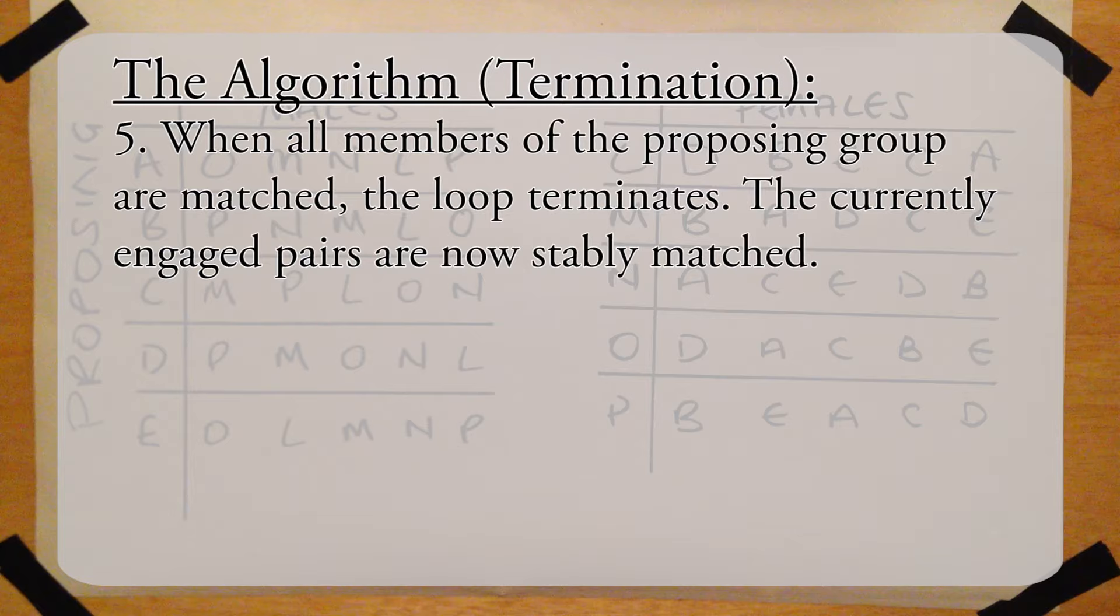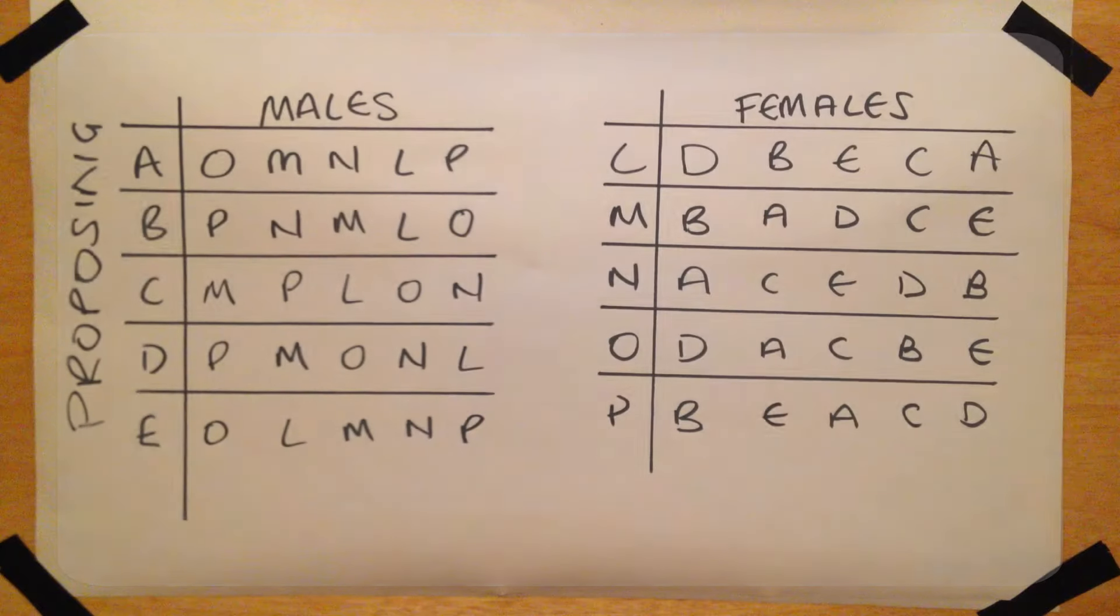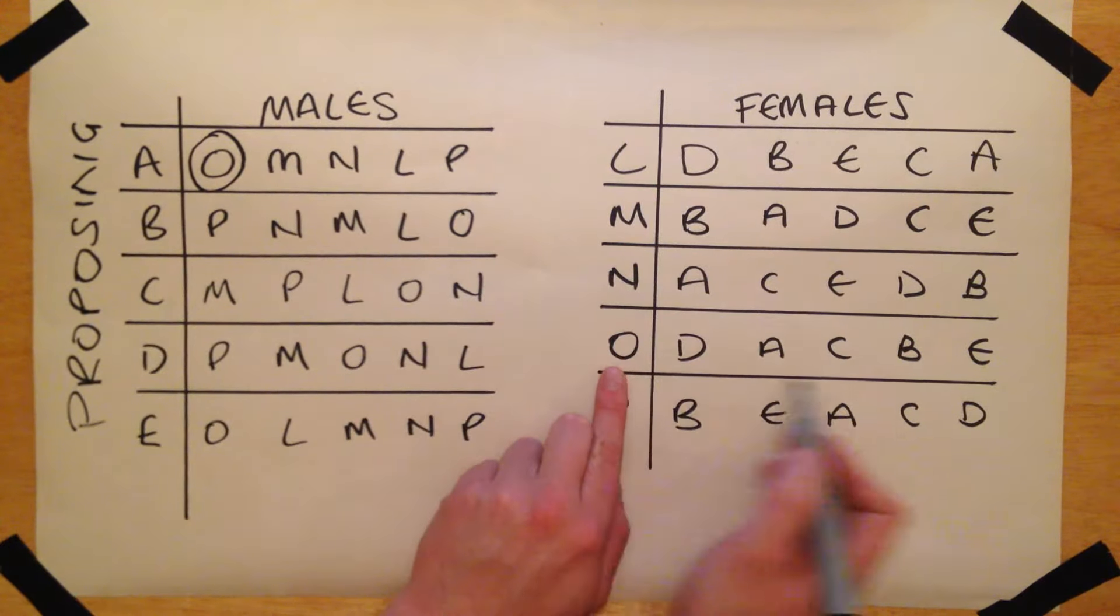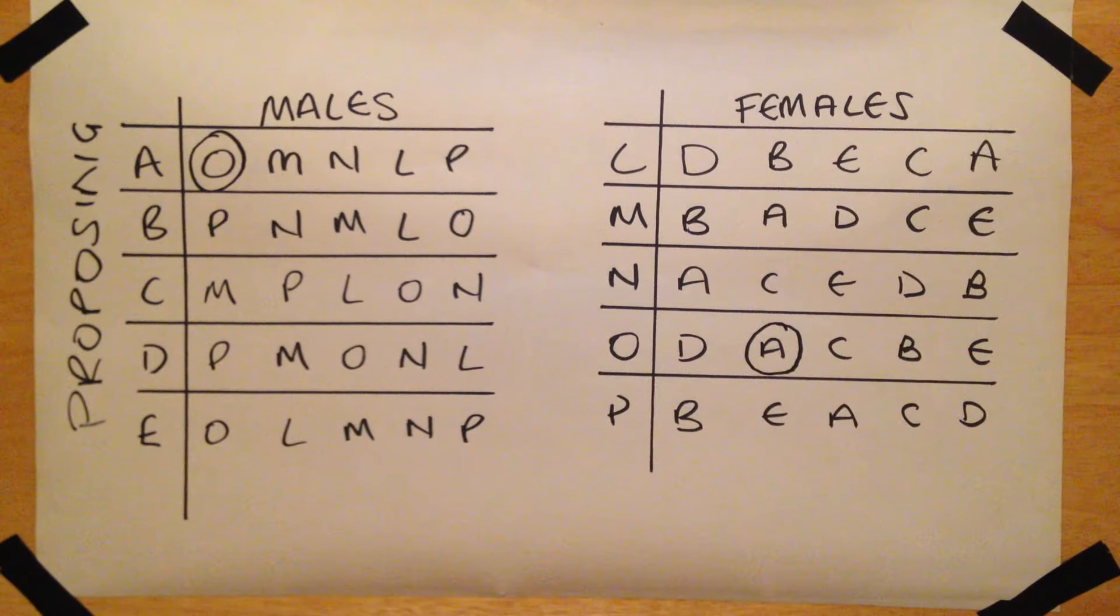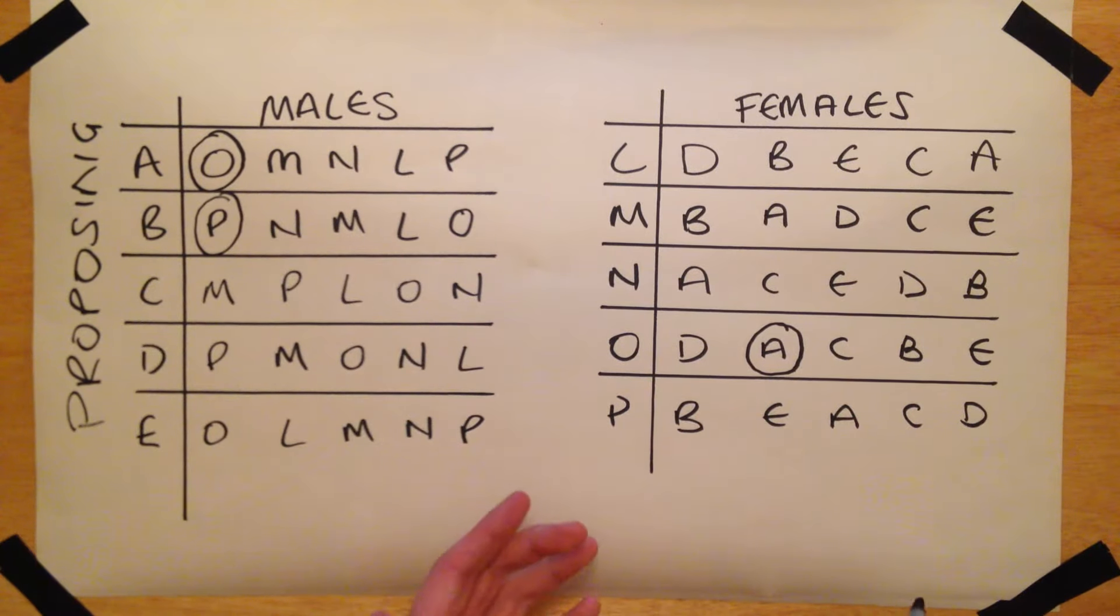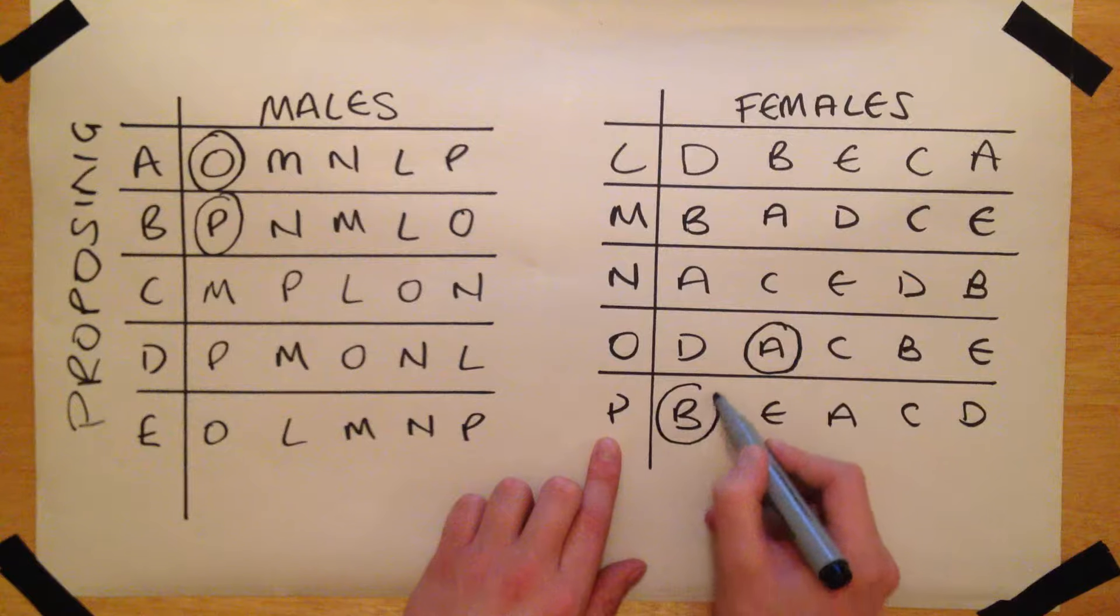Here is an example of the algorithm working in practice. Firstly, A proposes to his most preferable option, O. As O has no better options for the time being, she accepts, and A and O are engaged. Next, B proposes to his most preferable option, P, and as she has not received any better offers, she also accepts.